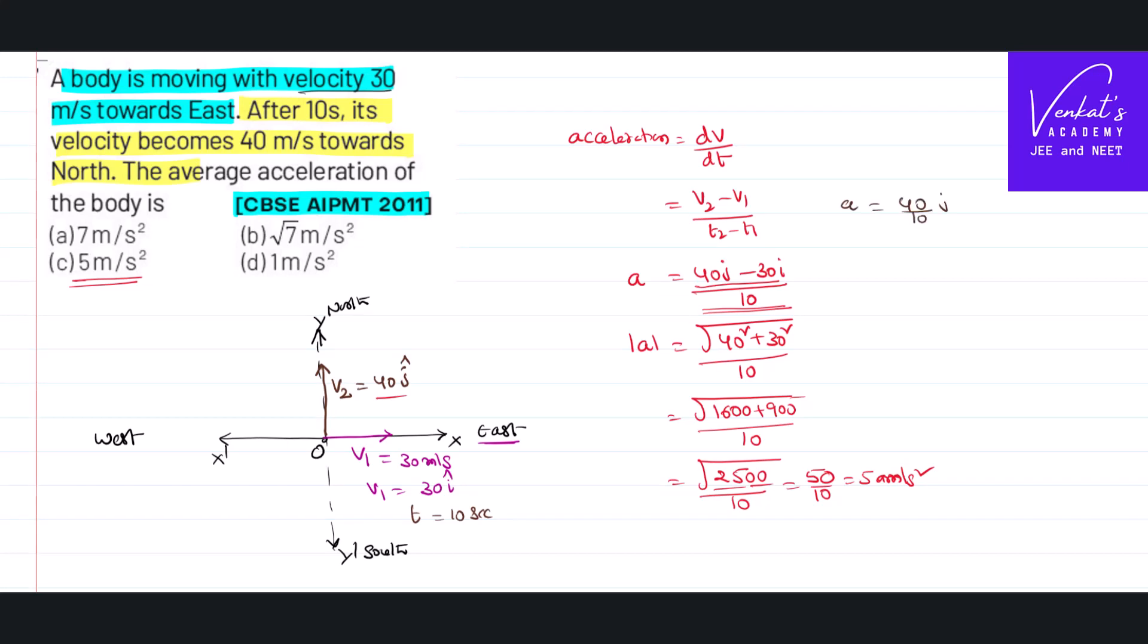Once you got the magnitude of that acceleration, acceleration can be written as 40 by 10 j cap minus 30 by 10 i cap, that is minus 3i cap plus 4j cap. So that's the value of acceleration in terms of vector. I have just simplified 40 by 10 and 30 by 10.